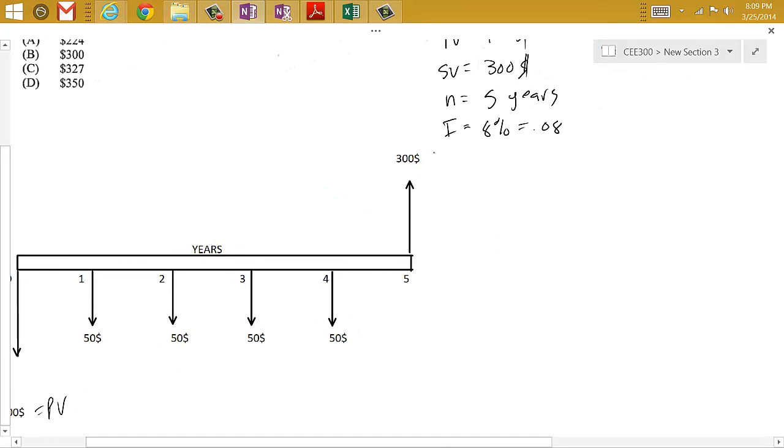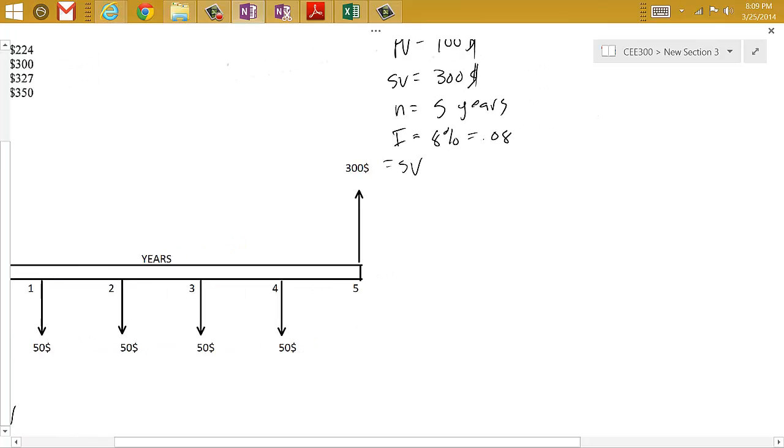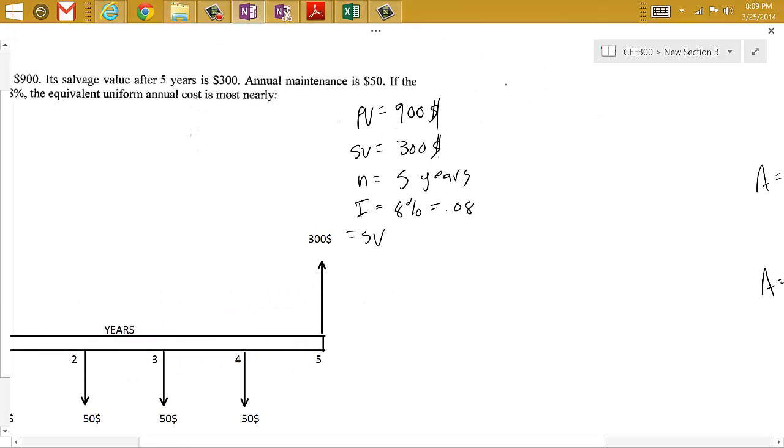So this is our present value. This is our salvage value. Oh, and we also have a maintenance cost of $50. I forgot to add that in.